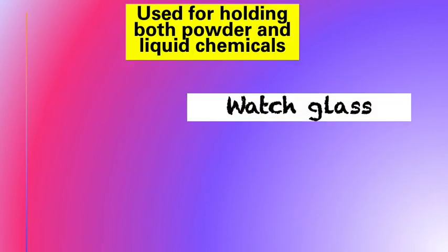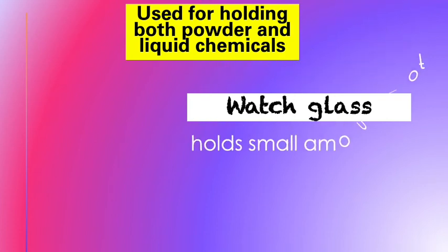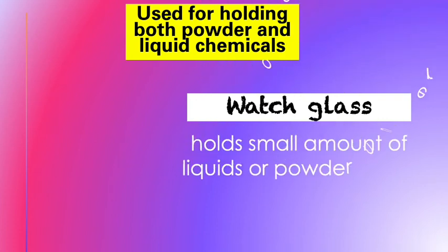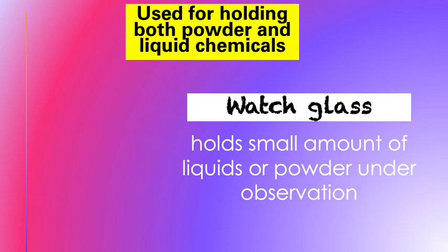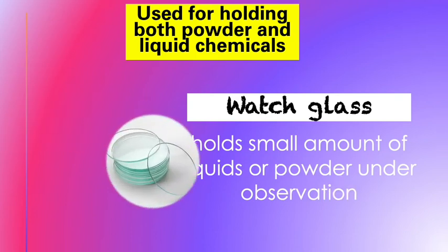The first one is a watch glass. A watch glass holds a small amount of liquids or powder under observation. Here's a picture of a watch glass.